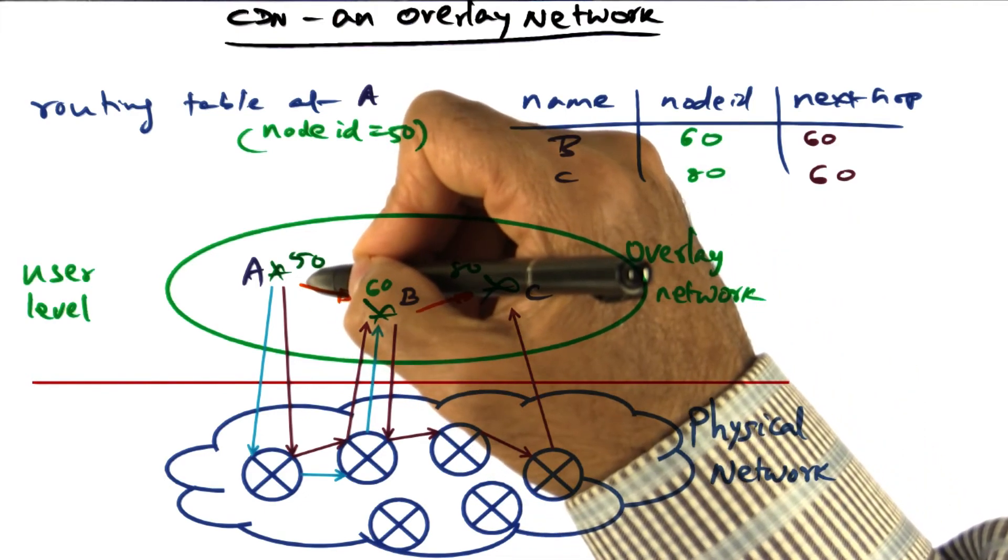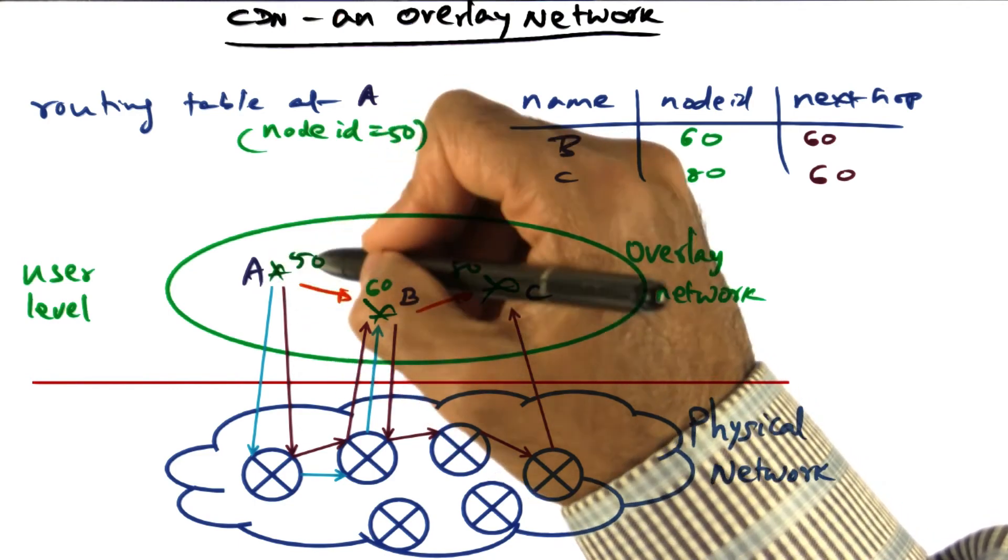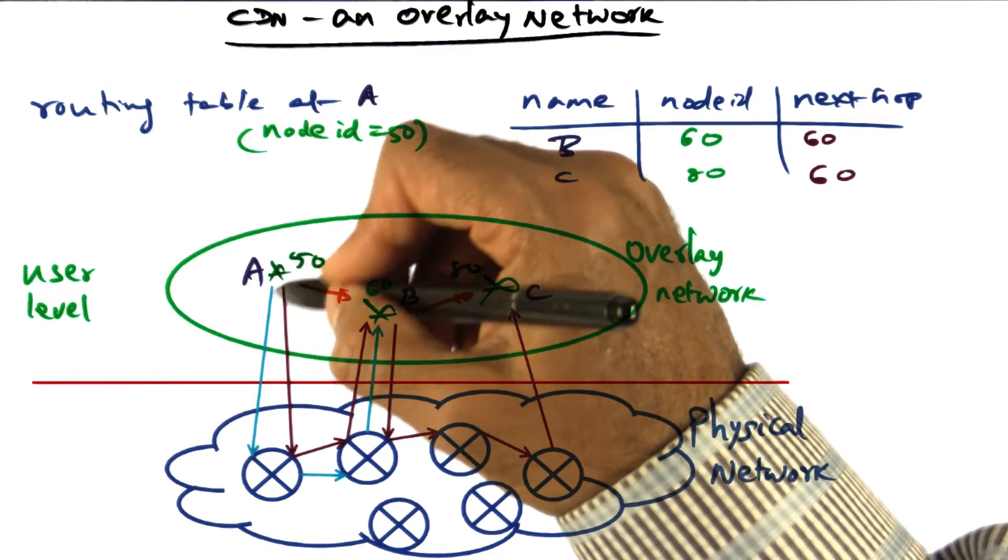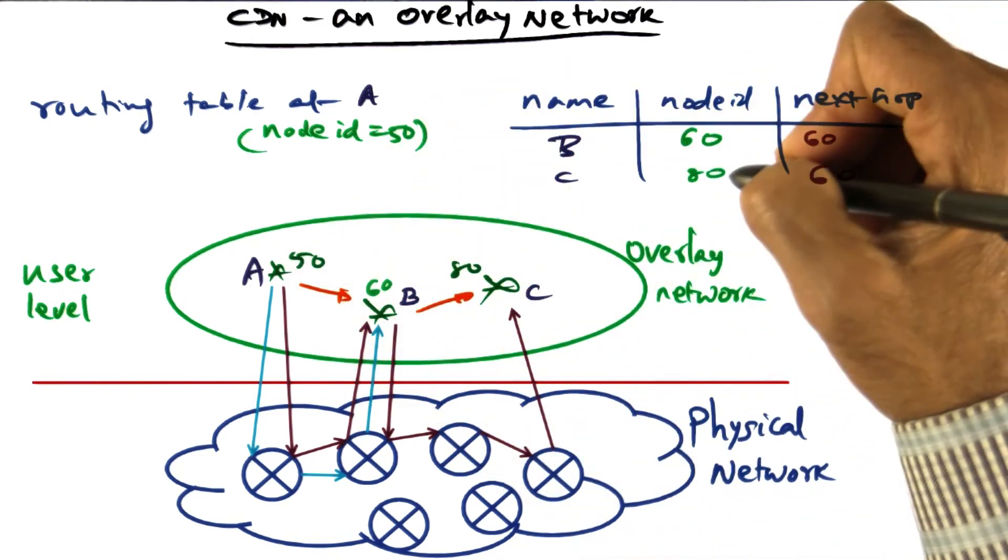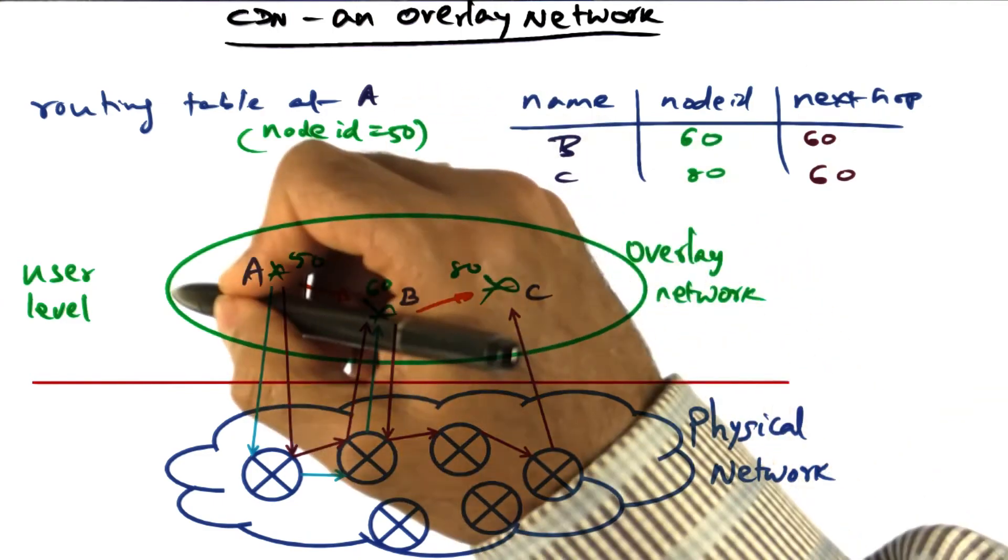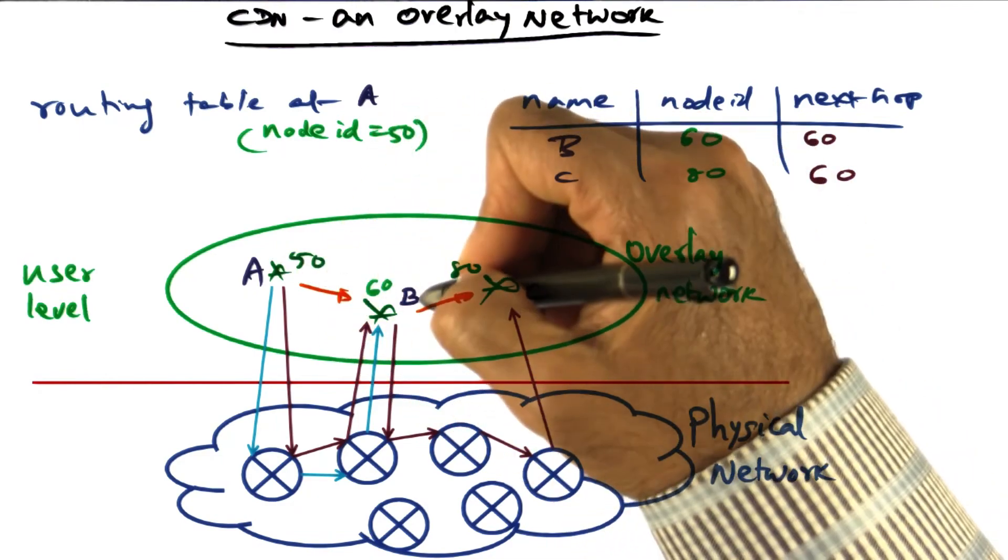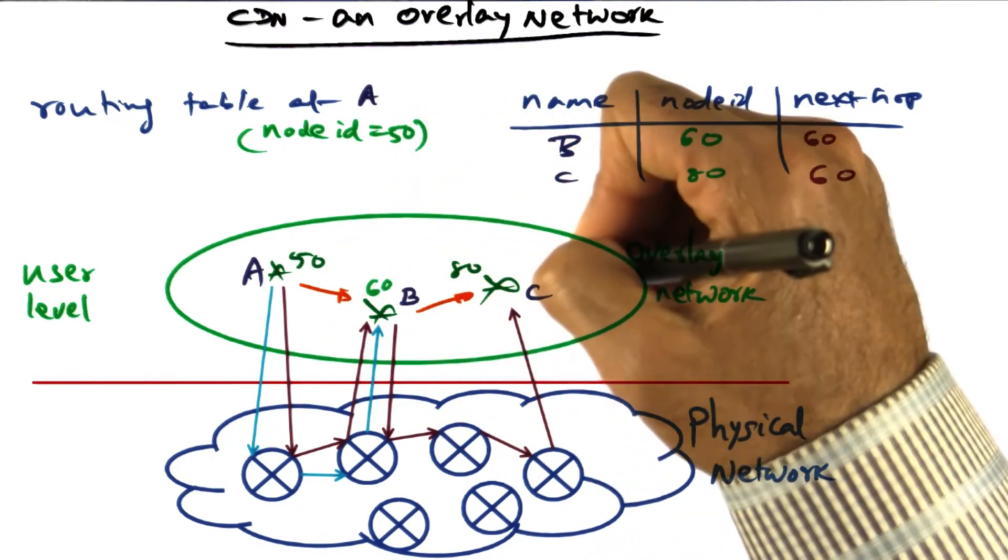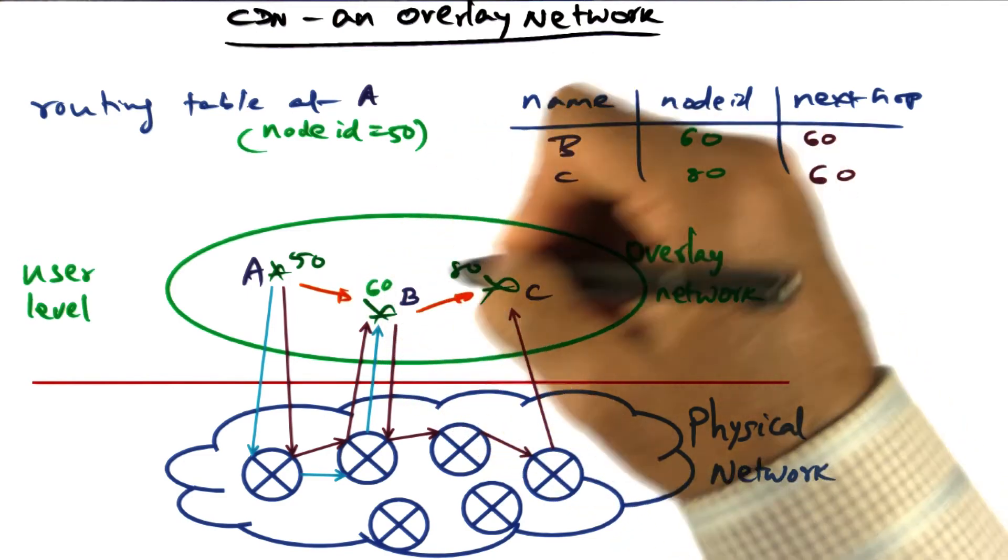At the user level, if my node ID is 50 and my node name is A, when I wanted to send a message to C, I sent it to B—it took two hops. At the user level, two hops from A to C: went to B, my buddy, and B then sent it to C. This is the user-level traversal of the message.